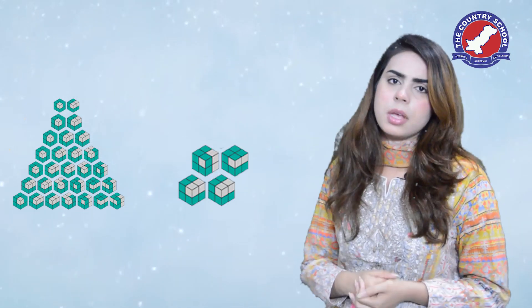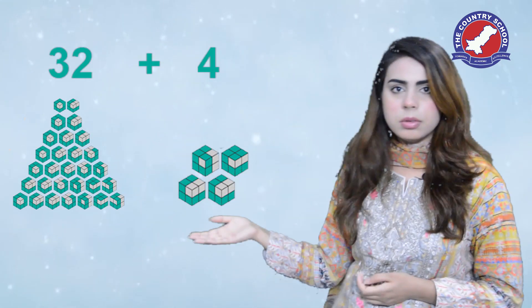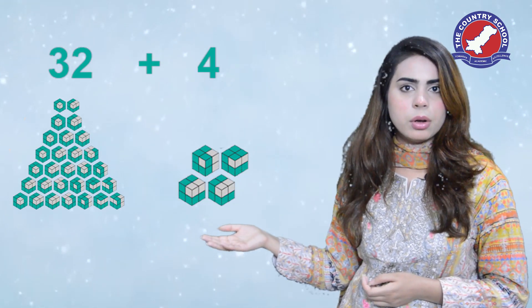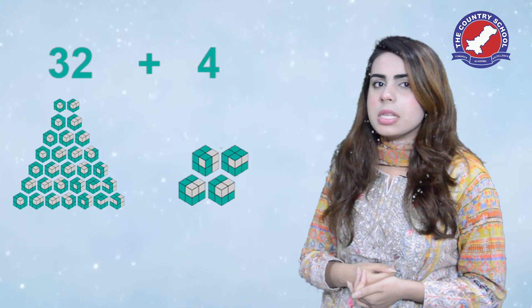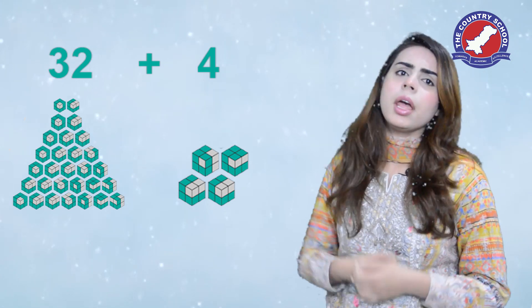For example, hamare paas 32 cubes hain and ek aur bachha hai — let's say again, Bubbles — uske paas 4 cubes hain. So 32 plus 4. Chaliye, hum 32 ko break down karte hain — 30 and 2. 30 mein hamare paas 3 tens hain, and 1s kitne hain? 2 — so 32.